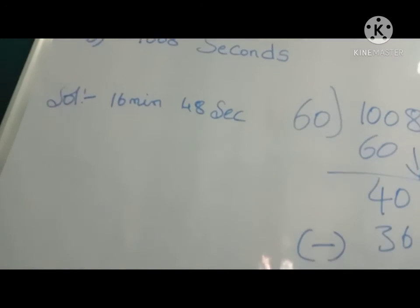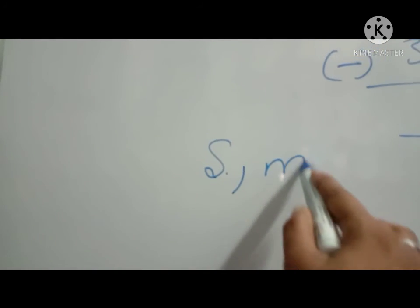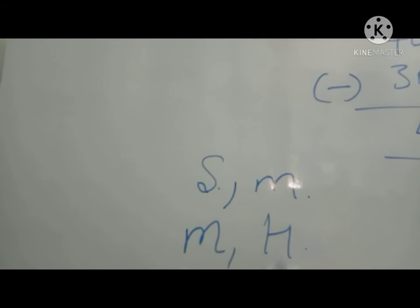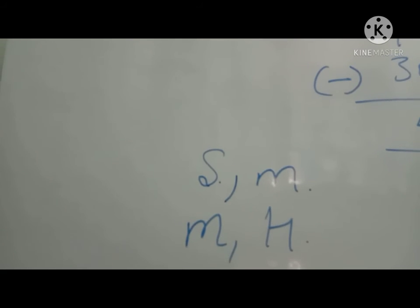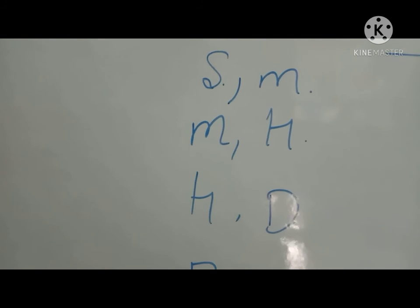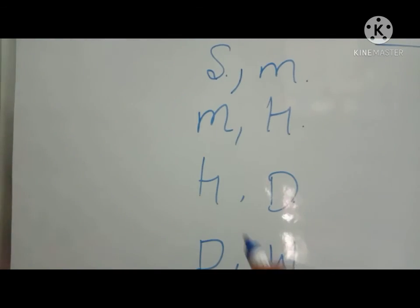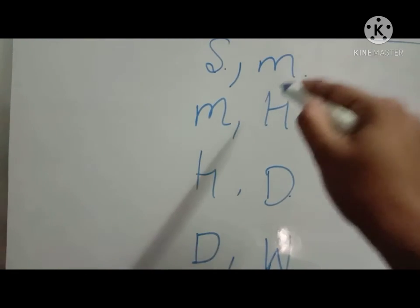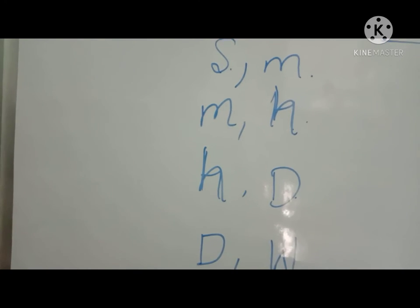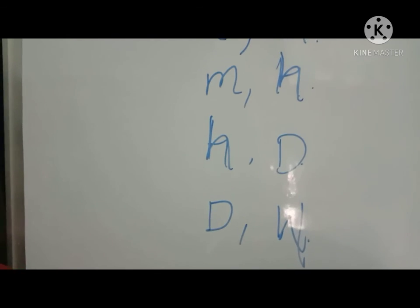To summarize: if the value is in seconds, first convert into minutes. If in minutes, convert into hours. If in hours, convert into days. If in days, convert into weeks. If in weeks, convert into months. This is the conversion hierarchy for changing into higher units.